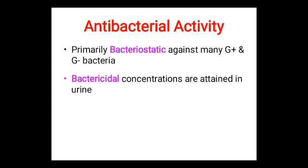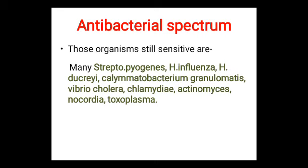Sulfonamides are primarily bacteriostatic against many gram-positive and gram-negative bacteria, but bactericidal concentrations are obtained in urine. Organisms still sensitive to sulfonamides include Streptococcus pyogenes, Haemophilus influenzae, Haemophilus ducreyi, Calymmatobacterium granulomatis, Vibrio cholerae, Chlamydia, Actinomyces, Nocardia, and Toxoplasma.